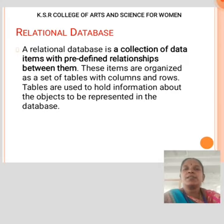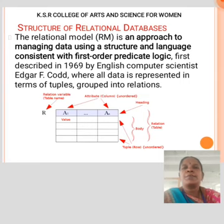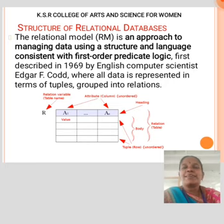A relational database is a collection of data items with predefined relationships between them. These items are organized as a set of tables with columns and rows. Tables are used to hold information about the objects to be represented in the database. The relational model is an approach to managing data using a structure and logic which consists of first-order predicate logic, first described in 1969 by English computer scientist F. Codd, where all data is represented in terms of tuples grouped into relations.